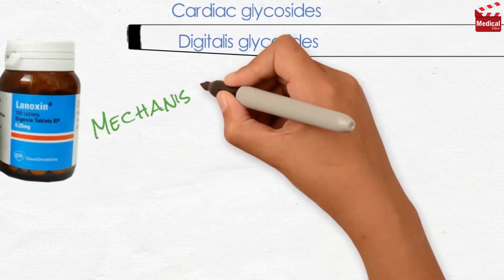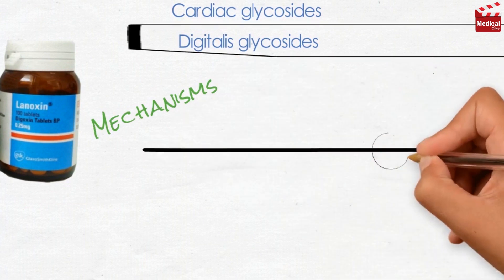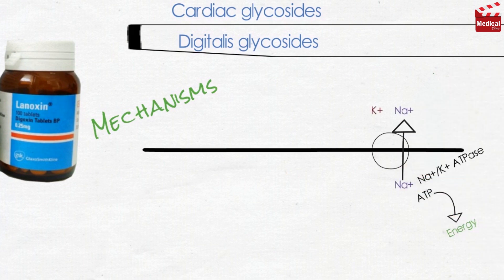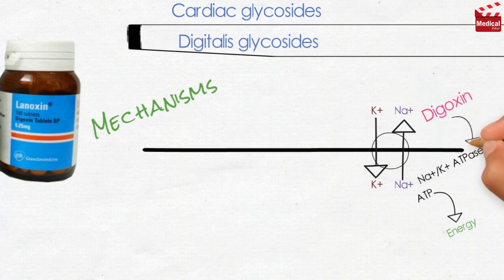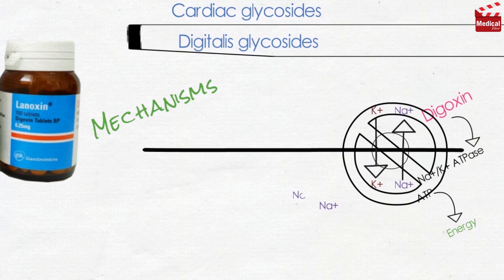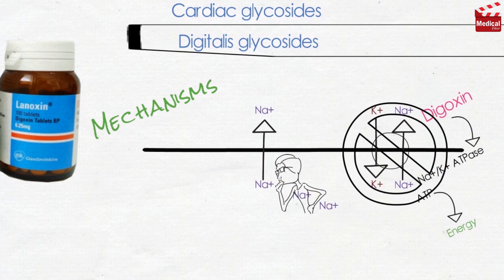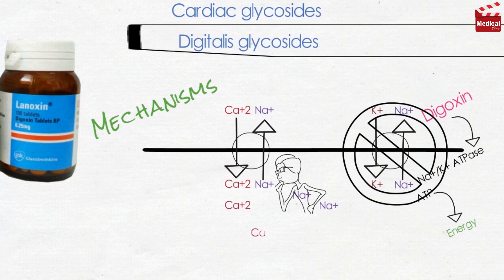Let's discuss the exact mechanism of digoxin at a cellular level. There is a membrane-bound catalytic enzyme called sodium-potassium ATPase. This enzyme hydrolyzes ATP to produce energy, which is needed for sodium to get out of the cell in exchange with potassium. Digoxin inhibits this enzyme, so intracellular sodium concentration increases. Cardiac fibers then exchange the intracellular sodium for extracellular calcium, extruding sodium in exchange with calcium without consuming energy.